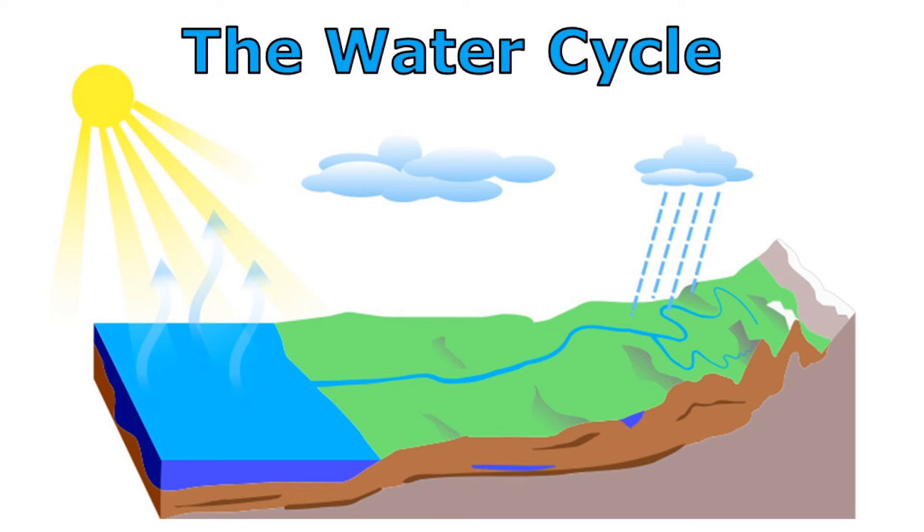So remember, it's energy from the sun that keeps the water cycle going. That heat from the sun causes evaporation to occur, and liquid water turns into water vapor that goes into the air. Condensation forms clouds, as water vapor turns back into tiny droplets of liquid water. That water falls back to earth as precipitation, usually in the form of rain.